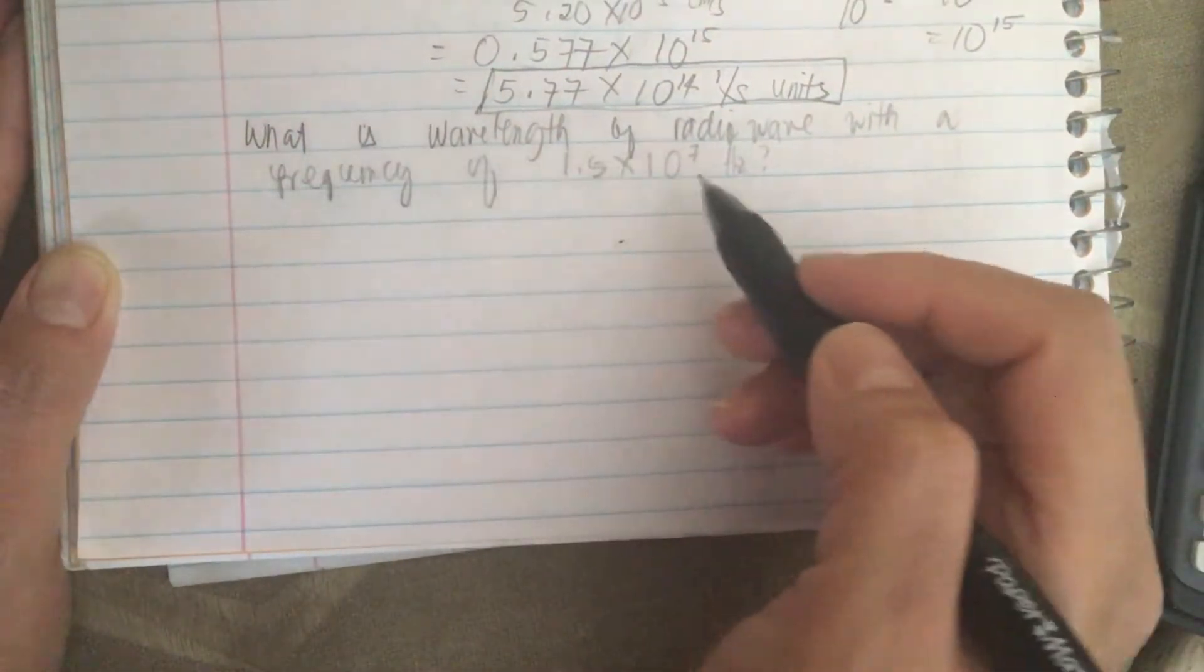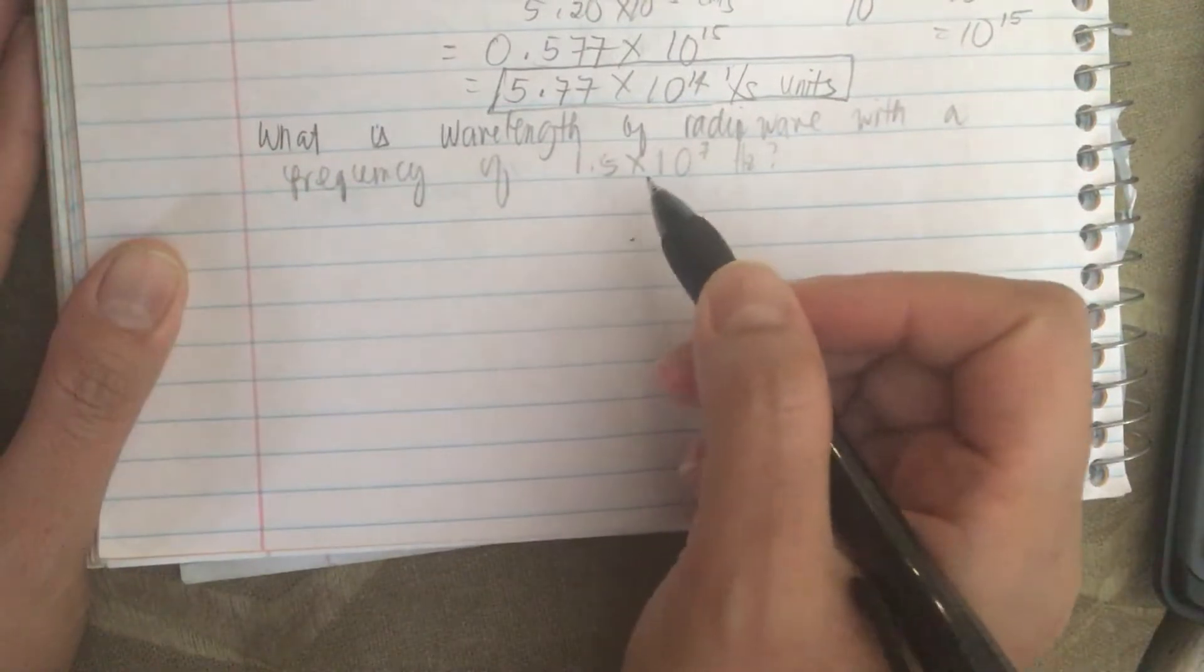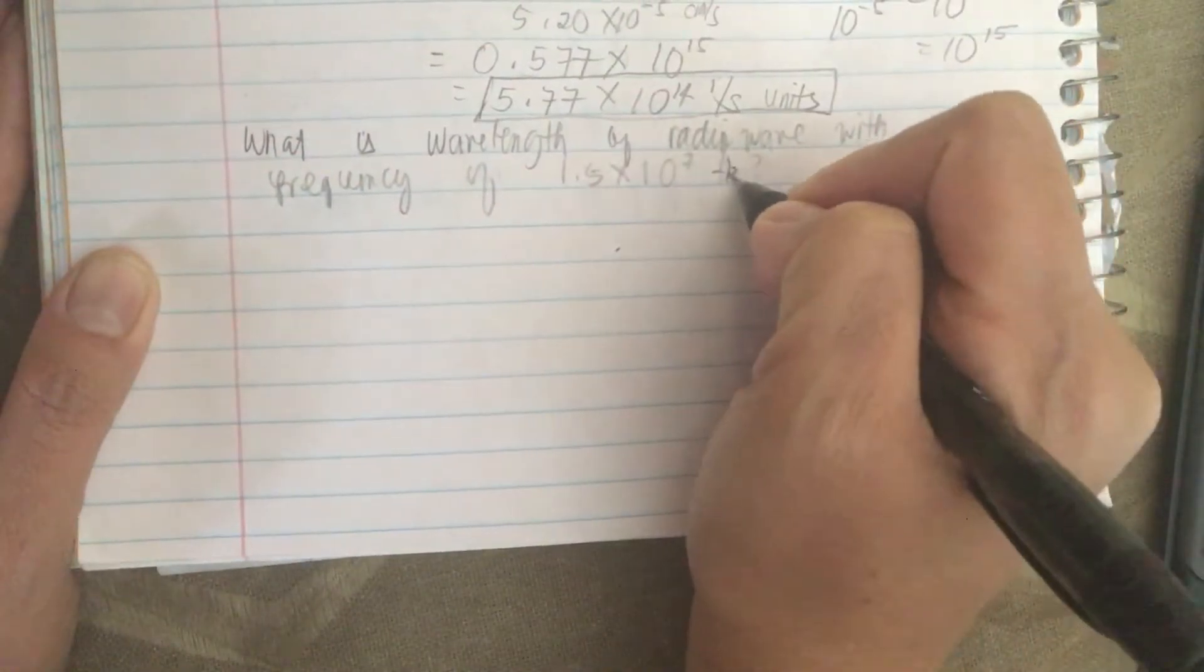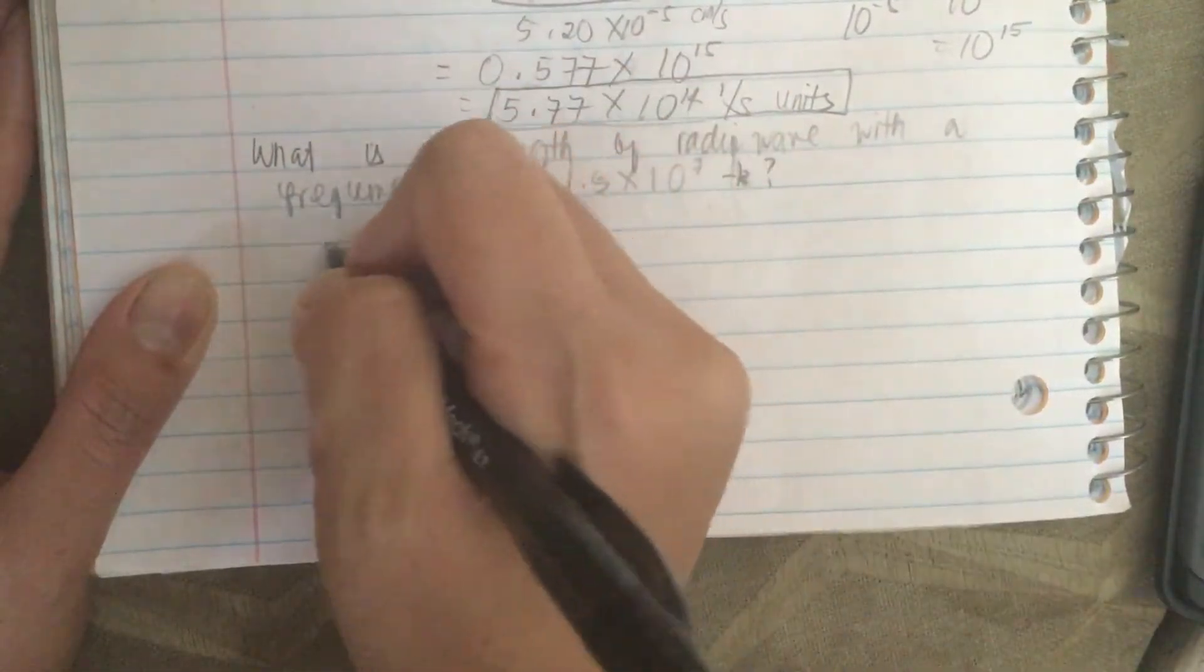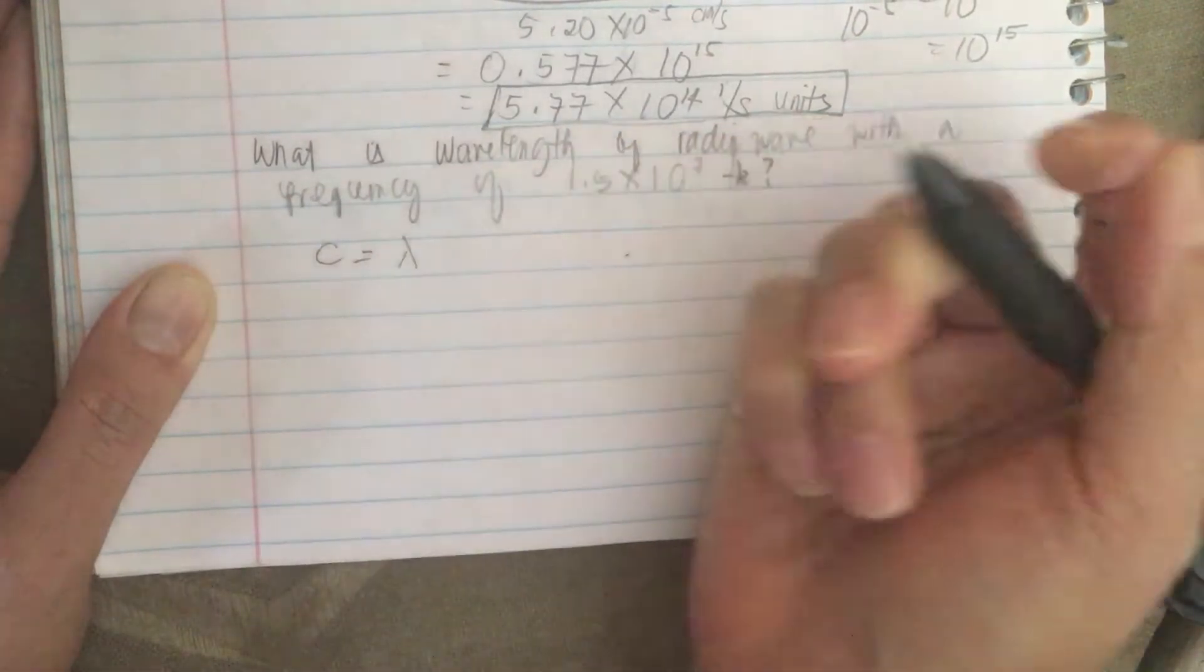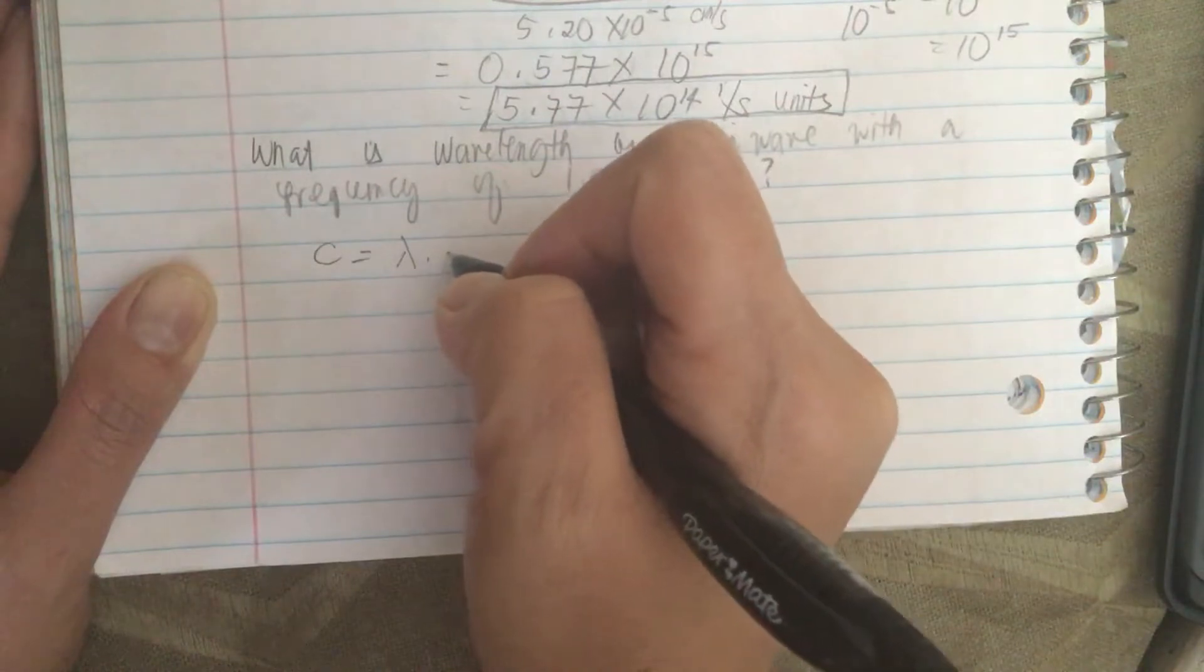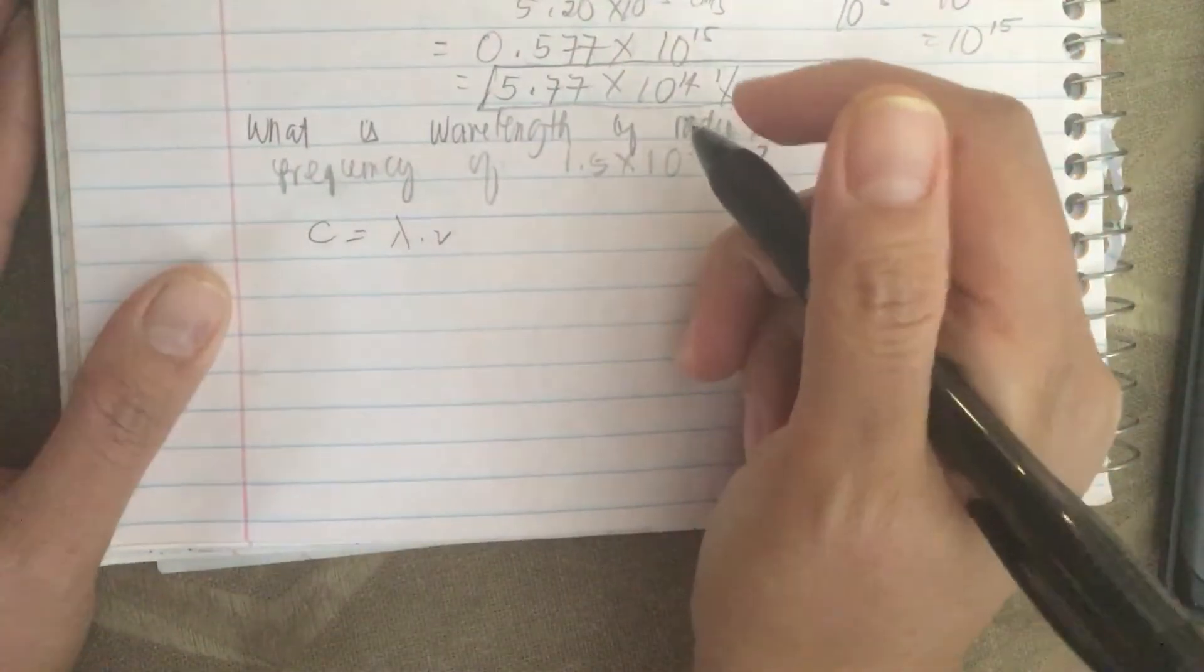What is the wavelength of radio wave with a frequency of 1.5 times 10 to the 7 Hertz? So the formula C is equal to the wavelength lambda times the frequency.